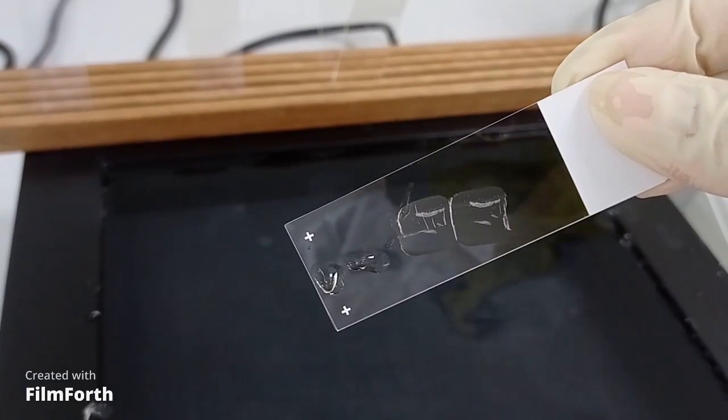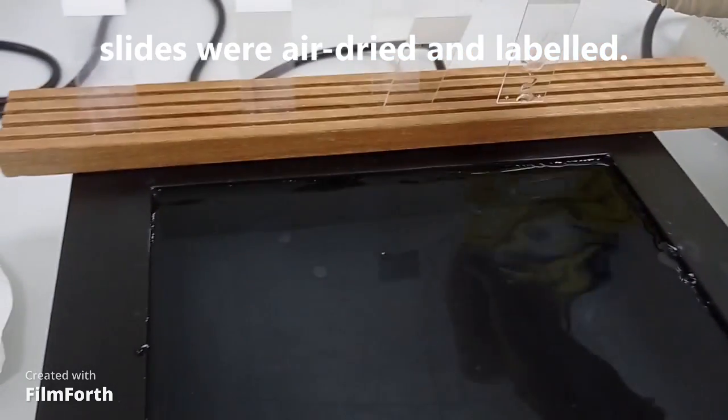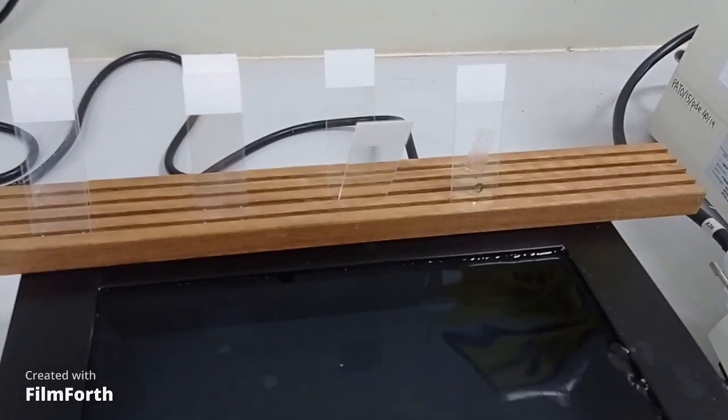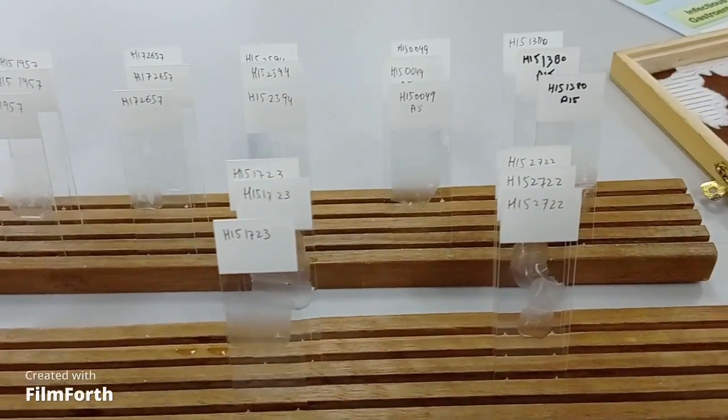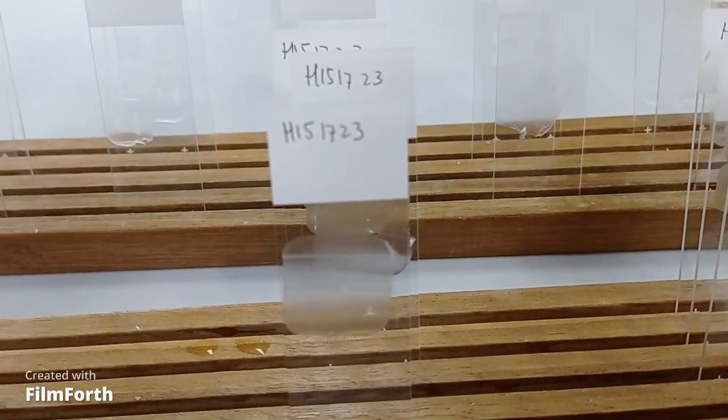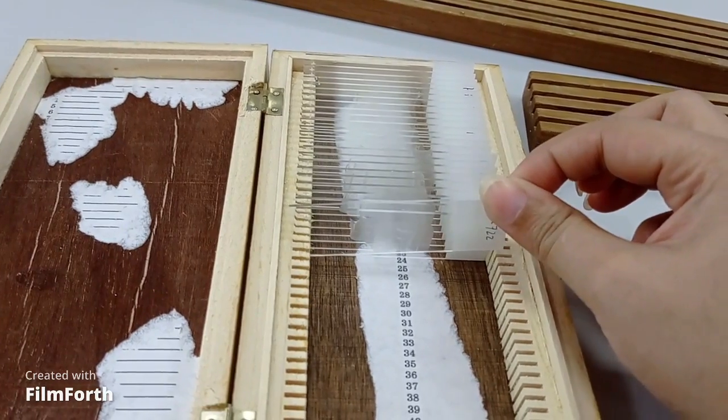After fishing the microsections onto the slides, let them air dry and label all of them. In the last step, store all of these slides in a proper slide box until you start with the next step.